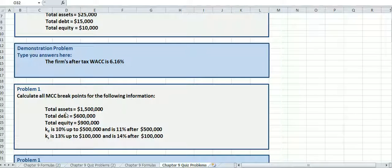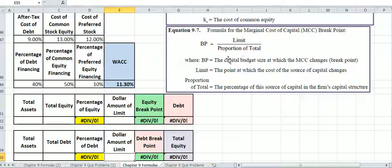total equity, and cost of debt is 10% up to $500,000, so that's the limit for debt, and the cost of common stock is 13% up to $100,000. Now, understand that these percentages are not going to be used in the formula. This is just telling you what the cost change is after each of the limits, because we're going to use this formula right here, and the only thing we need is the limit and the proportion of total to figure this out.